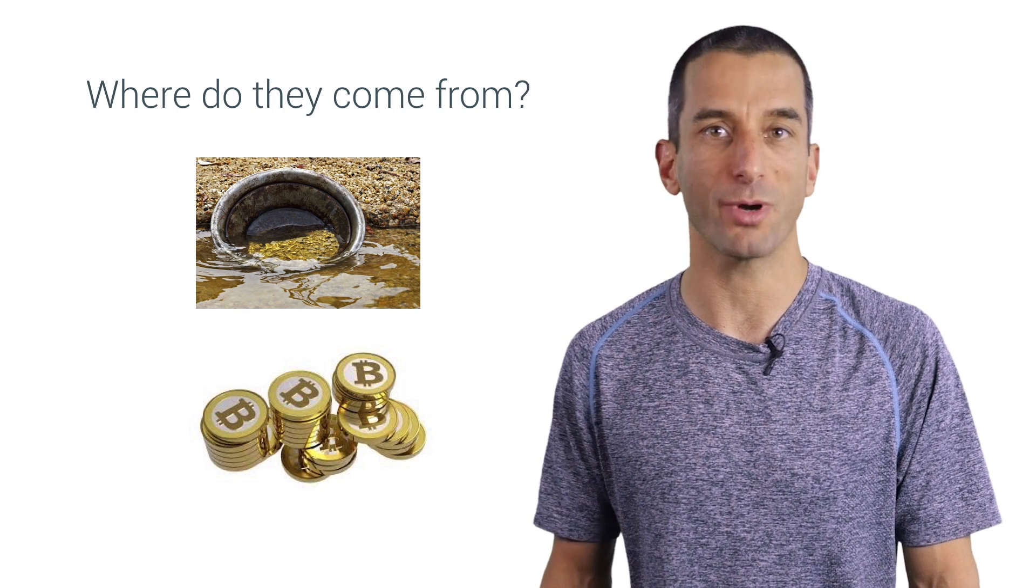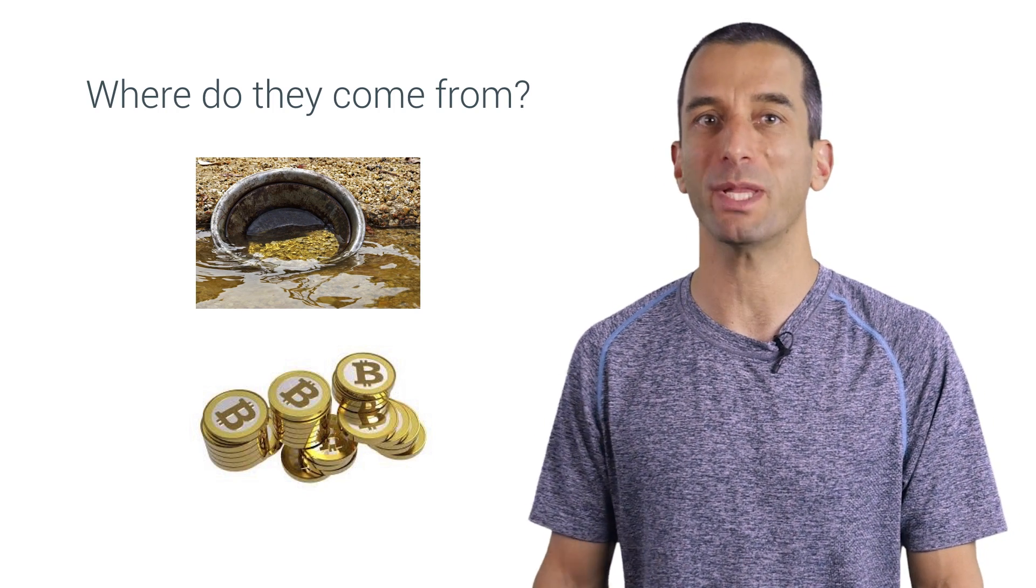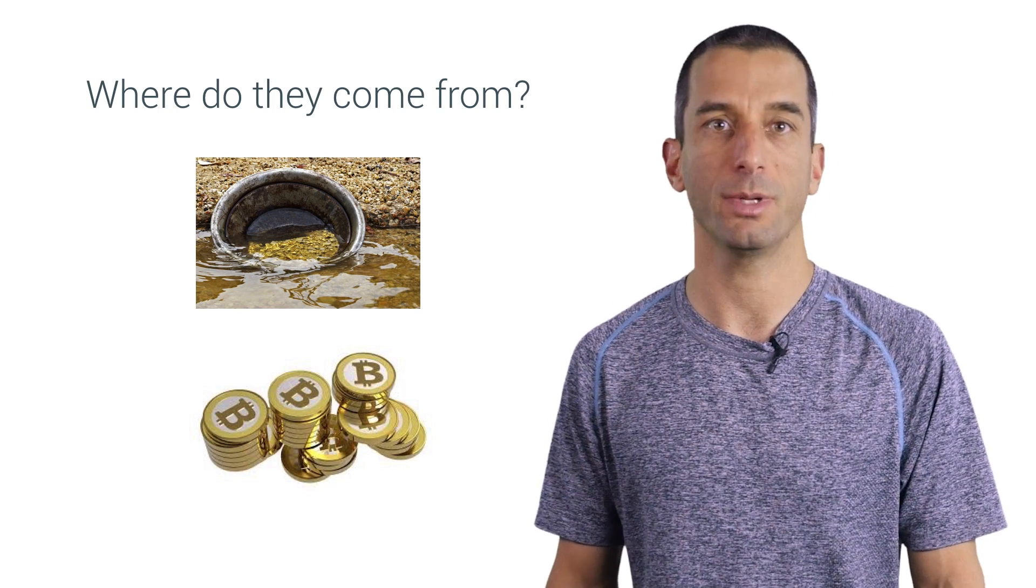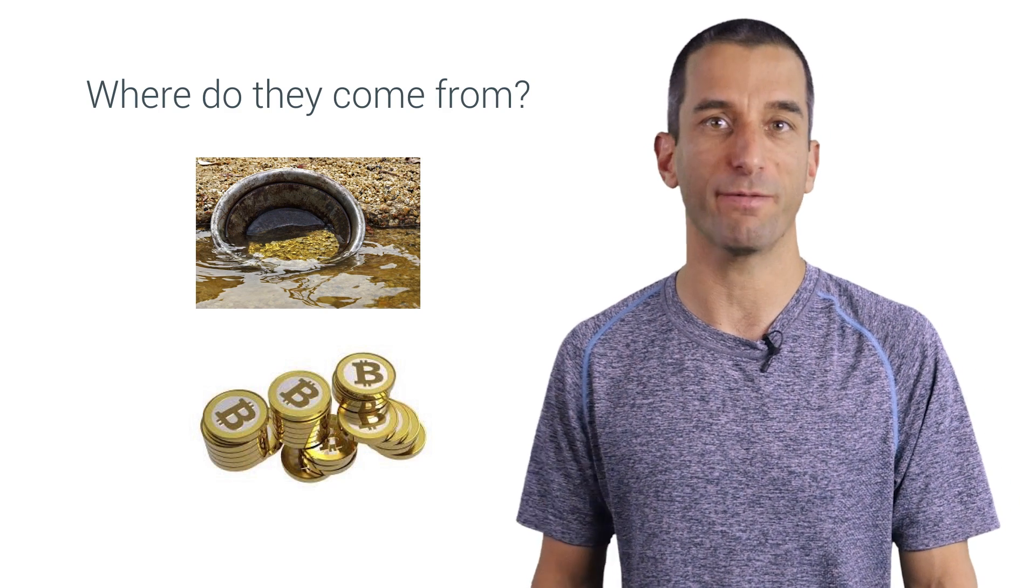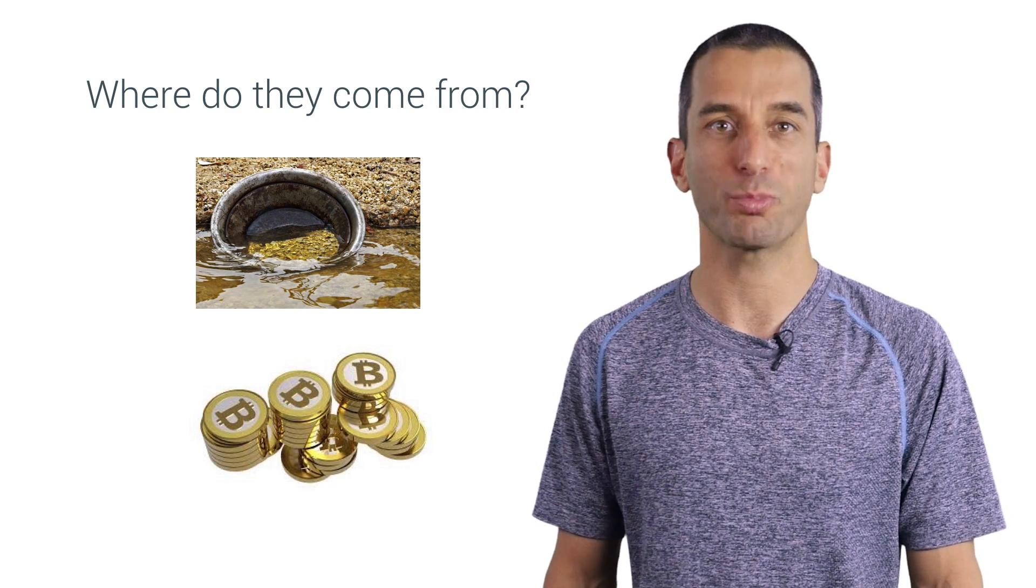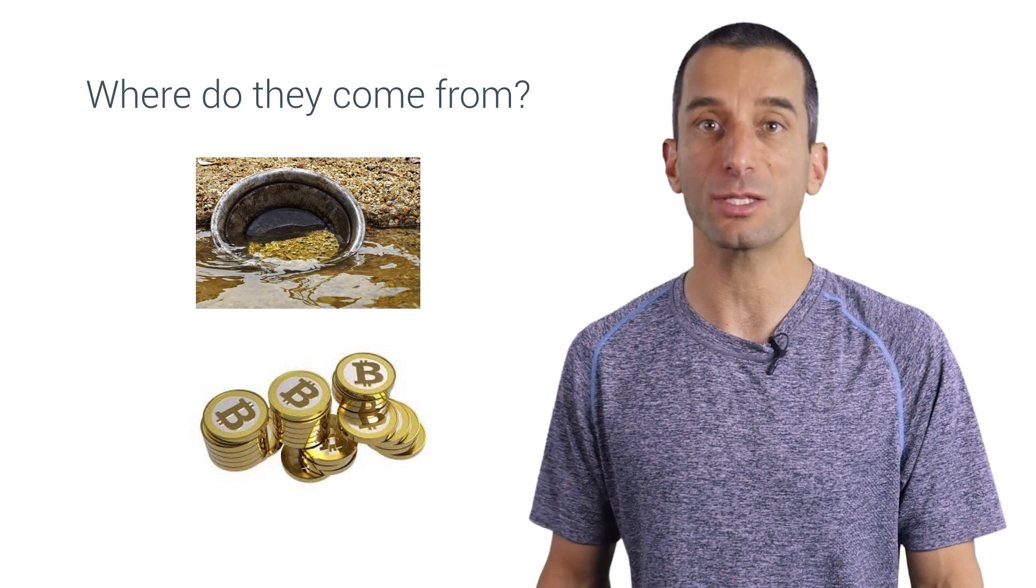The Bitcoin system is programmed to generate a fixed number of Bitcoins per unit of computing time. It is also self-sustaining, coded to prevent inflation, and encrypted to prevent anyone from disrupting its code.